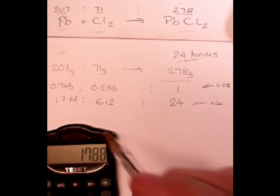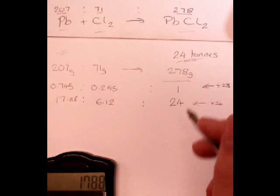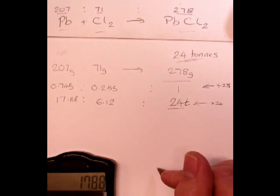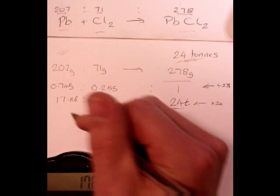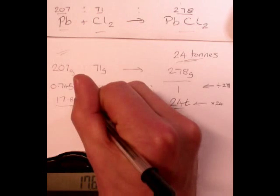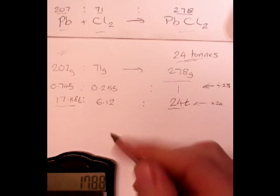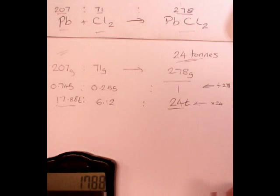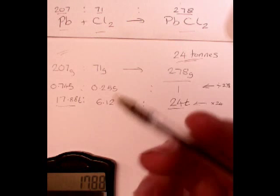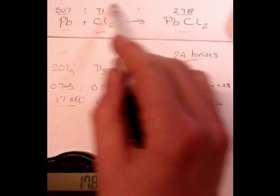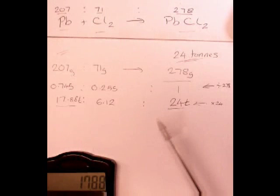And, what was the question? How much lead would I need to make 24 tons of PbCl2, which will make quite a lot of white paint, if that's what we're going to use it for? I need 17.88 tons, as long as all of it is converted. Now, we talked about percentage yield. Probably won't happen, but that's the calculation you work out. Always the same. Anything you want to know, get the ratio of formula masses for the balanced equation and work it from there.